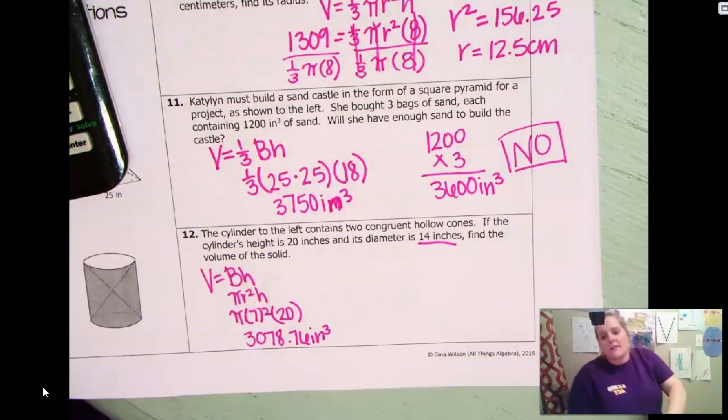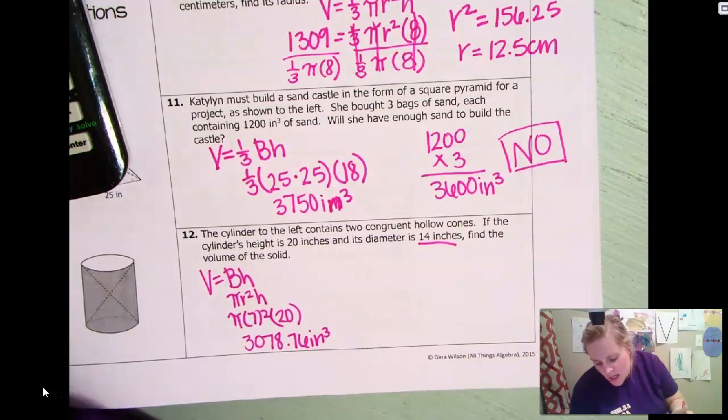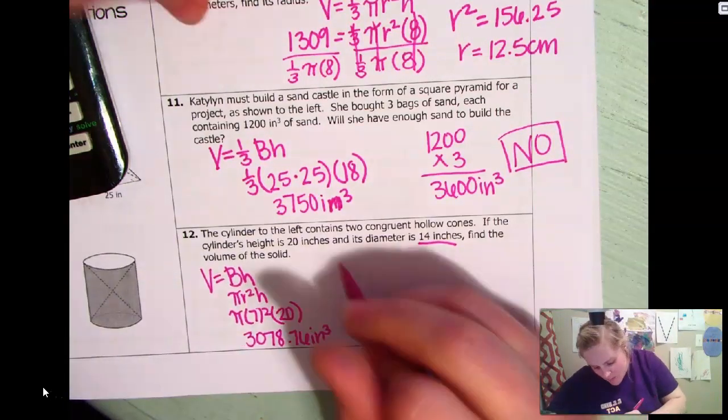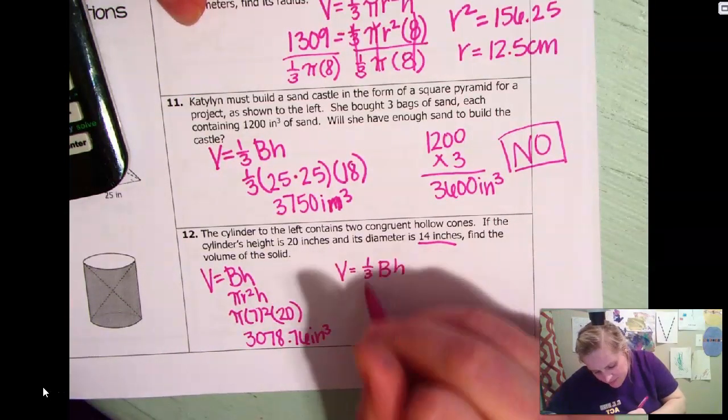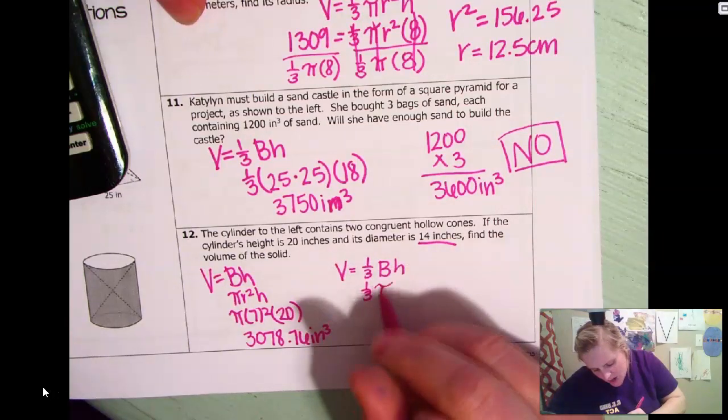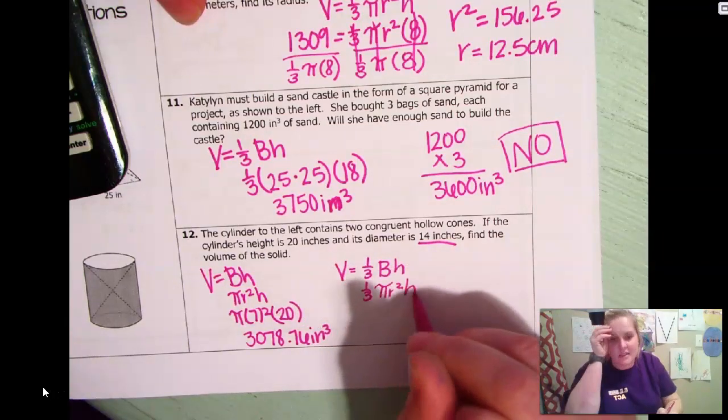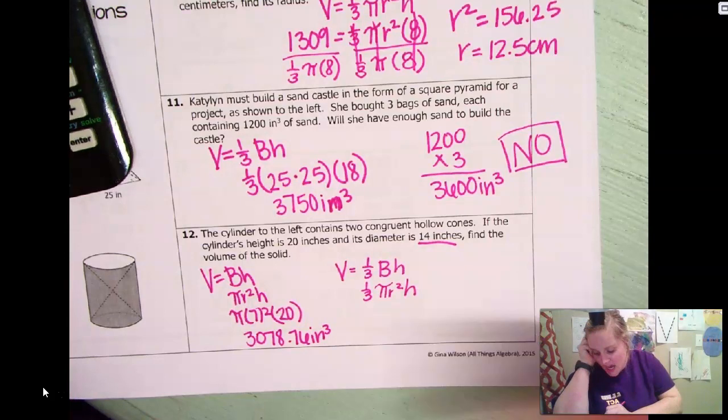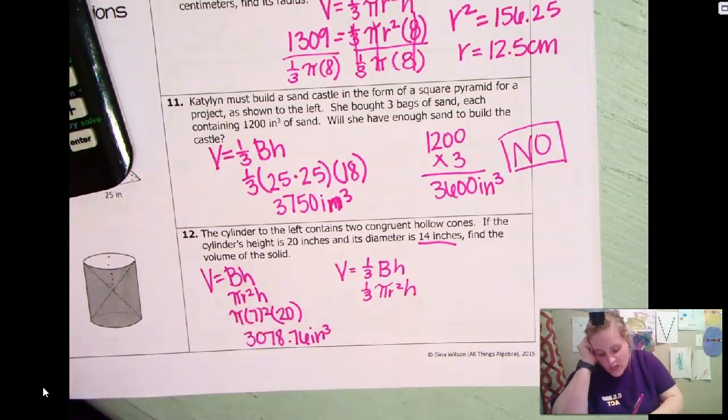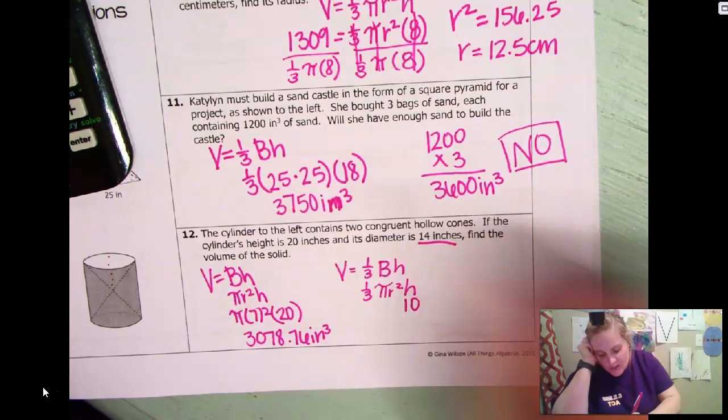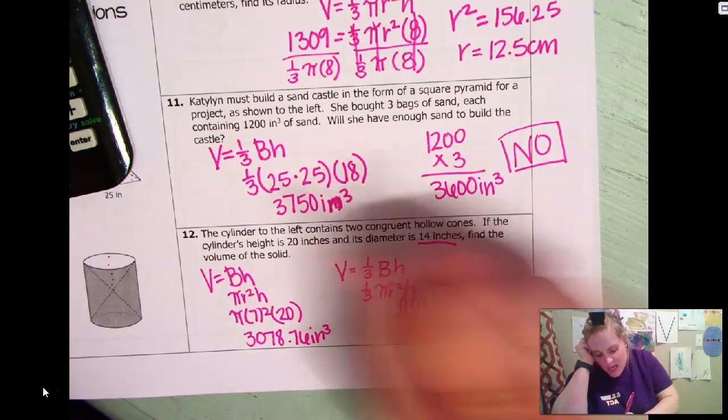Now I have two hollow cones that are going to be in here. So what I'm going to do is I'm just going to find one of those cones. Okay. So again, the base is going to be pi r squared times the height. Now, remember this height is only going to be half of the cone. So it's only going to be 10 versus 20. And then everything else will be the same.